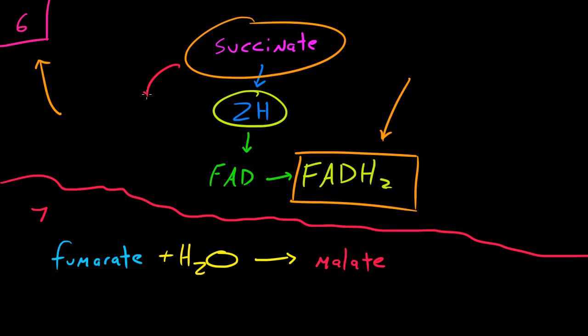So this is step number seven right here, I can go ahead and separate it with a little squiggly line. You take fumarate, which is your new and improved succinate molecule, and you add a water to it, and you end up with malate. So now you can go ahead and take malate and move on to step number eight, which is our last step.